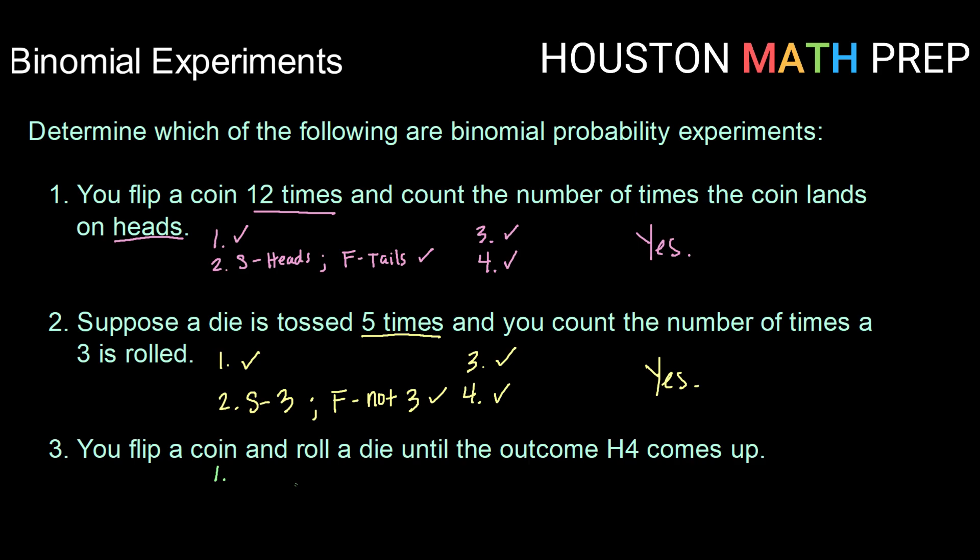Here, we are flipping and rolling until a particular outcome comes up. That could take one try, 10 tries, 30 tries. So already on our first criteria, we have no fixed number of trials.